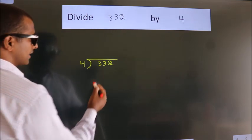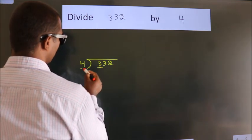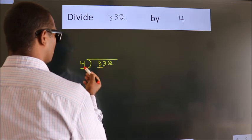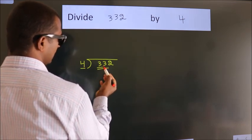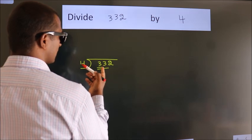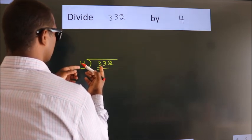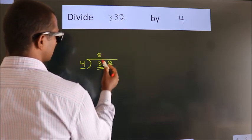Next, here we have 3, here 4. 3 is smaller than 4, so we should take 2 numbers: 33. A number close to 33 in the 4 table is 4 times 8 equals 32.